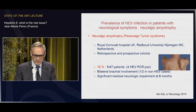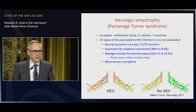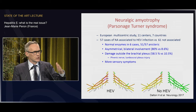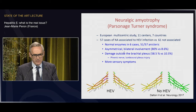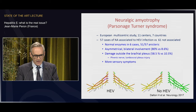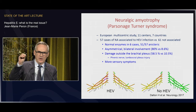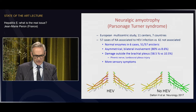A large European study coordinated by Harry Dalton across 7 countries and 11 centers examined all cases of neuralgic amyotrophy. When induced by HEV, neuralgic amyotrophy is different: it is asymmetrical with bilateral involvement — both shoulders affected — in 80% of cases versus only 8% without HEV. There is often damage outside the brachial plexus, particularly the phrenic nerve, causing breathing problems. There are also more sensory symptoms and more pain, suggesting a specific role of HEV in neurological amyotrophy.